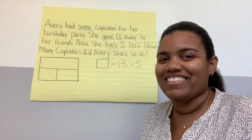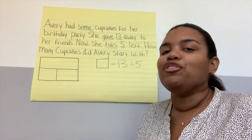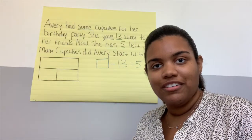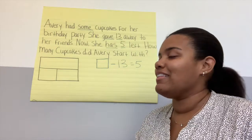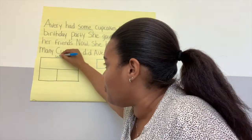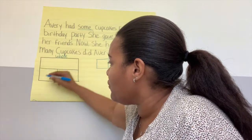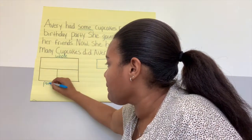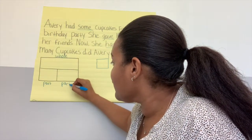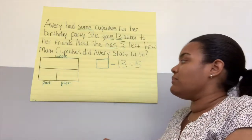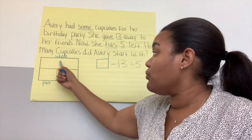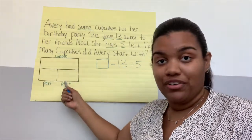You know what question I'm going to ask? You are right — I was going to ask, what should we do first with our part-part-whole model? You're right — label. You guys know exactly what I'm thinking. Whole, part, and part. Thank you for telling me where to label these. So we have our whole, which is here, and we have our part and our part.